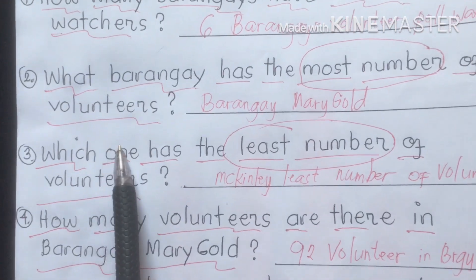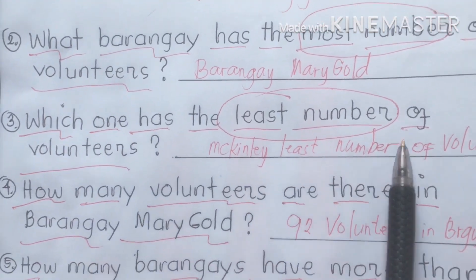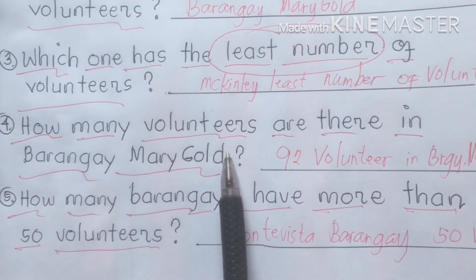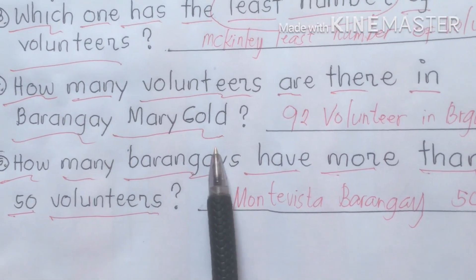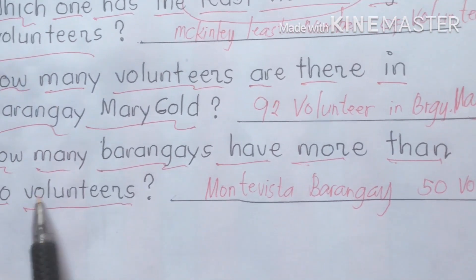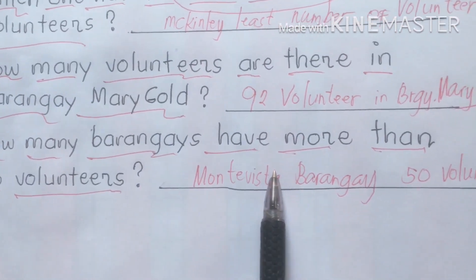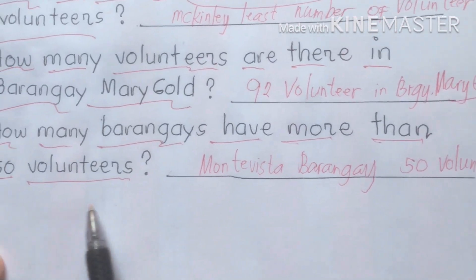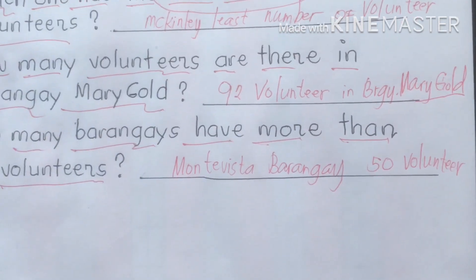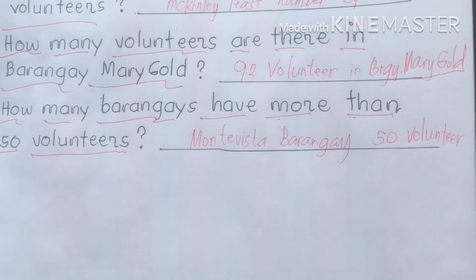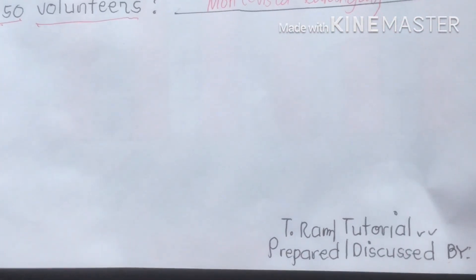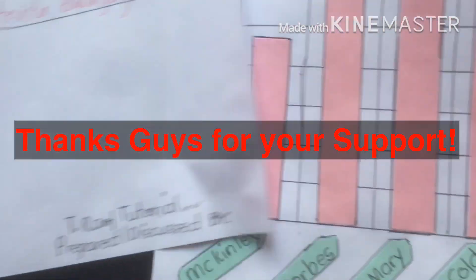Bar graphs are used to represent a collection of data, as represented here with the volunteer poll watchers. Question three: Mackinley has the least number of volunteers. Question four: there are 92 volunteers in Barangay Marigold. Question five: Monte Vista barangay has more than 50 volunteer poll watchers.